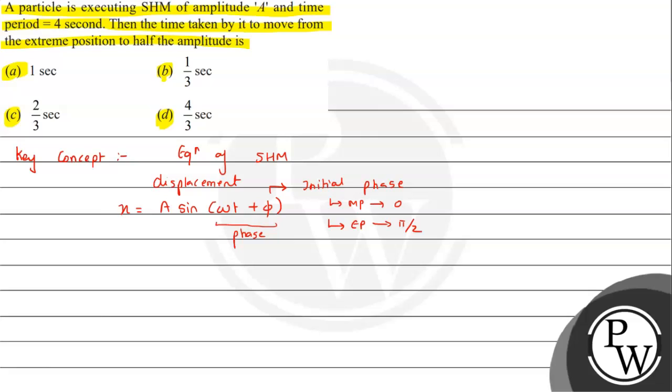In this displacement equation, A is the amplitude, which is the maximum displacement from the mean position. T is the time, and ω is the angular frequency. Now let's look at the question. In the question, we have the time period given as T = 4 seconds.